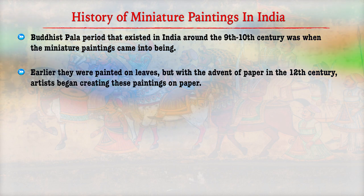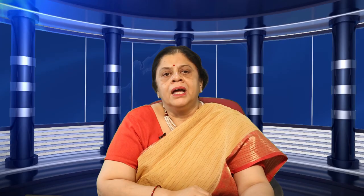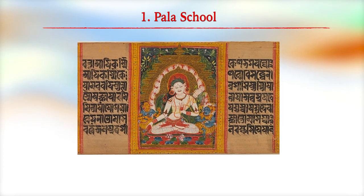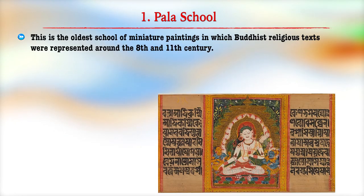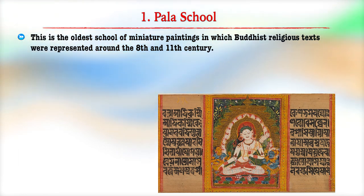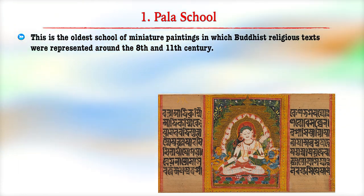Earlier, paintings were done on leaves, but with the advent of paper in the 12th century, artists began creating their paintings on paper. They reached their peak when the Mughal dynasty flourished in India. Now we will discuss some prominent schools of painting. The first is the Pala school — the oldest school of miniature painting, in which Buddhist religious texts were represented around the 8th and 11th century.